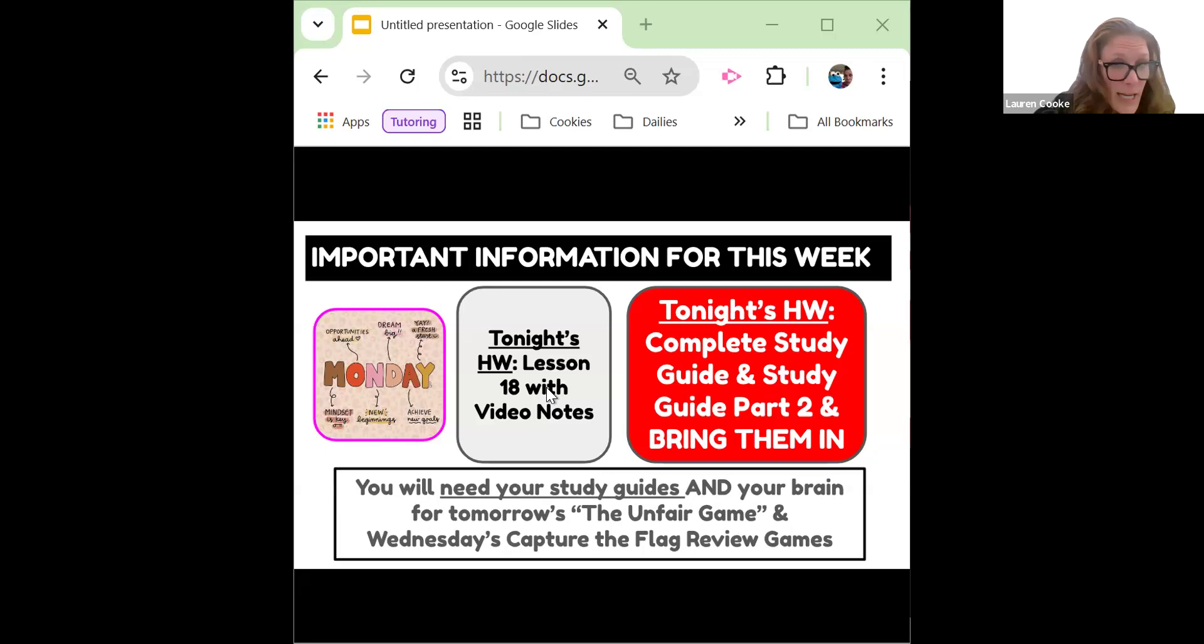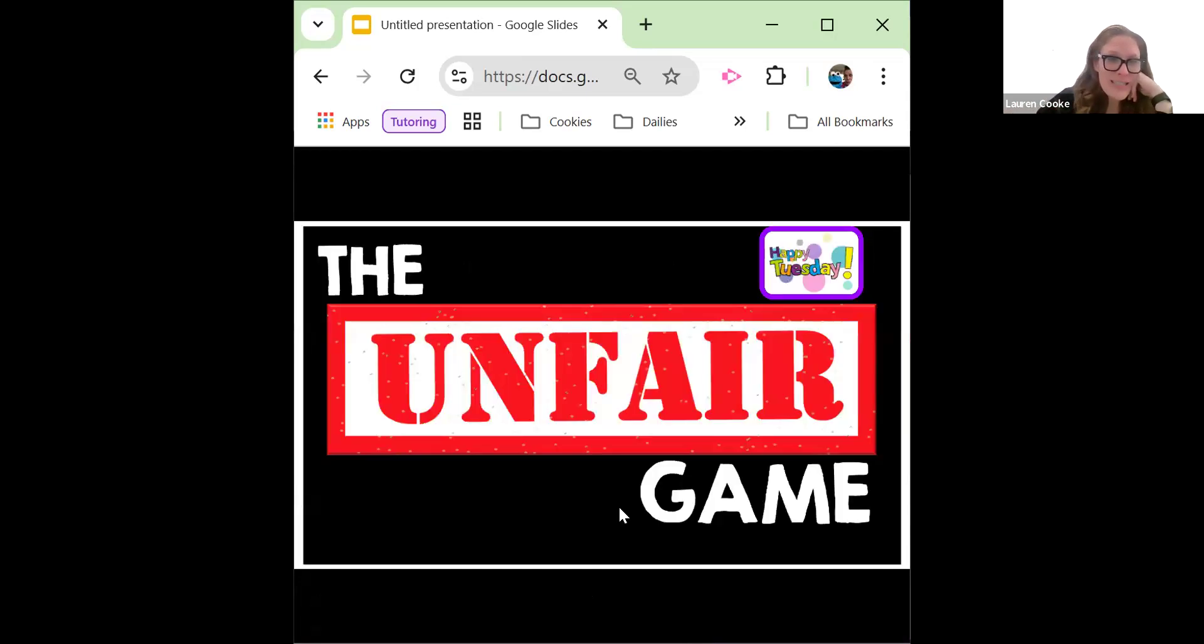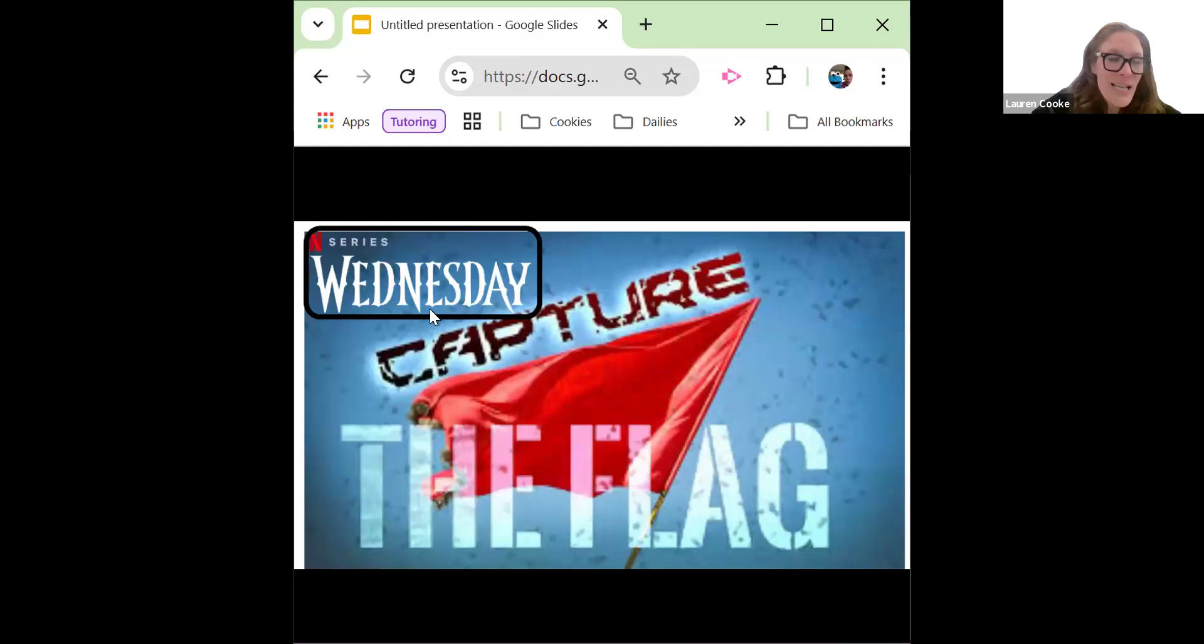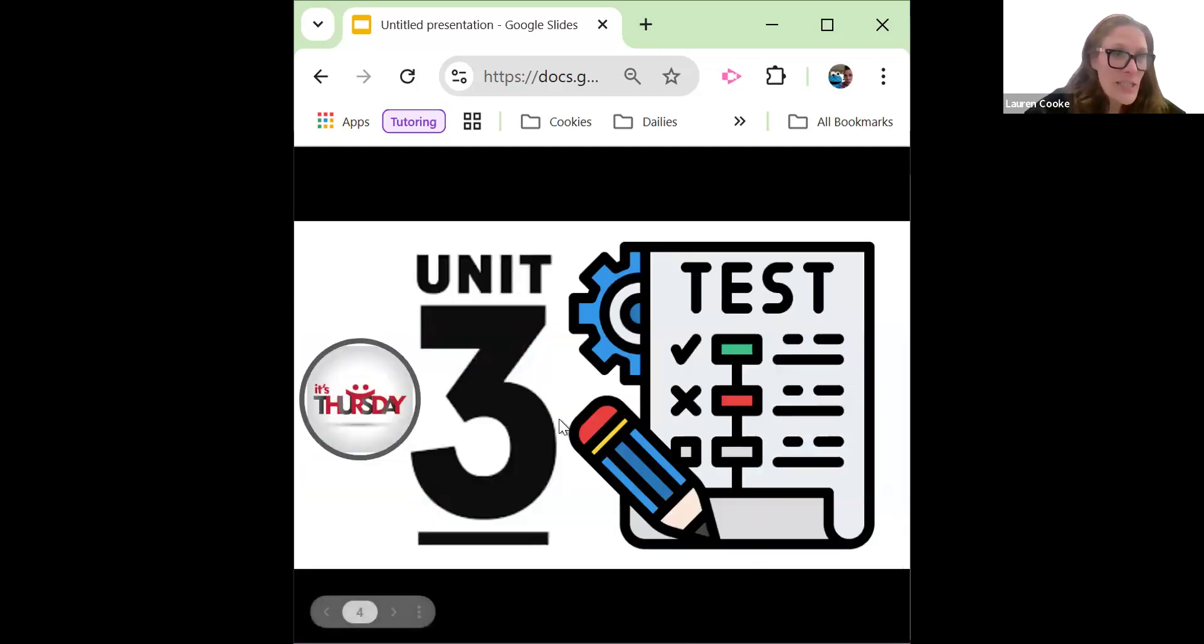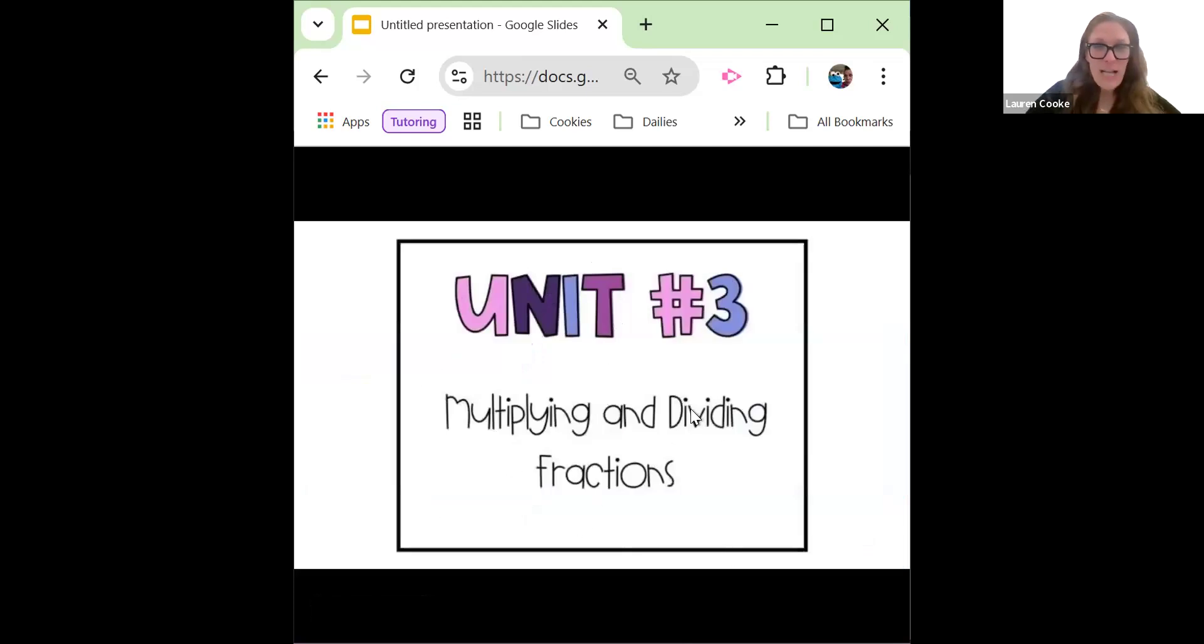So important information for this week. Tonight's homework is lesson 18 video notes, what we worked on in class, mainly those essential questions. Tonight's homework is also to make sure you have your study guides because we are trying to play the unfair game tomorrow. You'll definitely want to make it a little bit more fair for yourself if you have your study guides and also for the capture the flag. Tomorrow is the unfair game, Wednesday's capture the flag, and then Thursday is our unit three test on multiplying and dividing fractions. Friday we start brand new with a new unit, wrapping it all up: multi-digit multiplication and division.